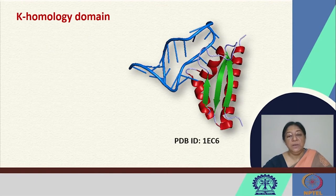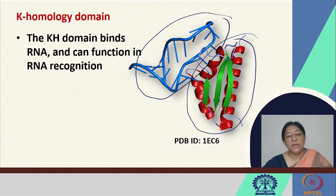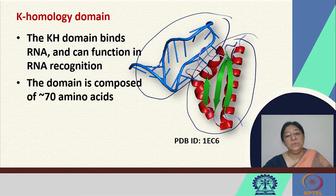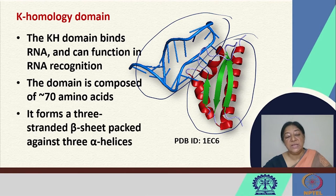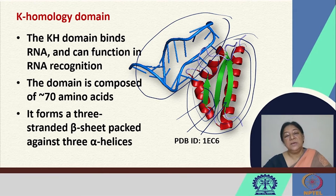Another domain is the K homology domain. This KH domain binds to RNA and functions in RNA recognition. The domain is composed of approximately 70 amino acids and forms a three-stranded beta sheet packed against three helices. The beta strands are marked in green and the three helices are marked in red. The geometry of the strands in the beta sheet and alpha helix are important in the specific recognition motif of this domain.